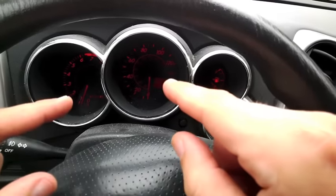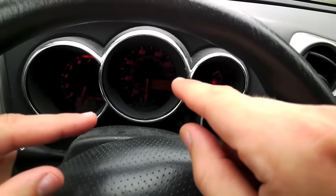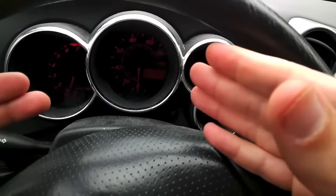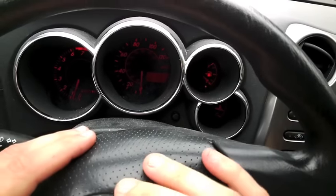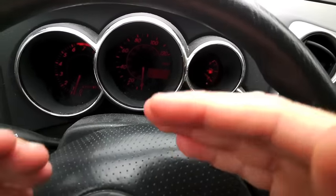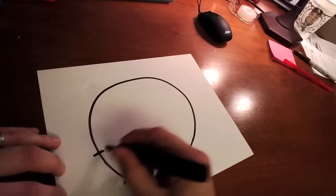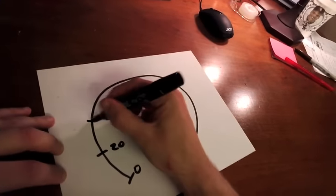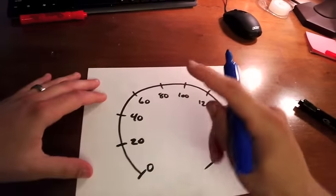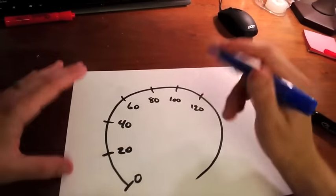The trick is this: instead of thinking about how many miles you're going in each hour, miles per hour, most of us tend to think about how much time it takes to get a certain distance. Instead of printing our speedometers with a number of miles per hour, we should show you how much time it would take to go one mile at that speed.